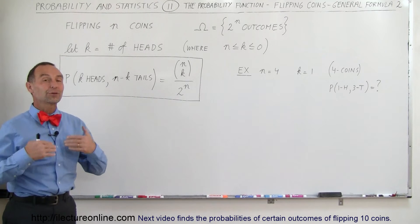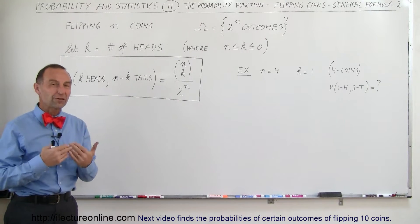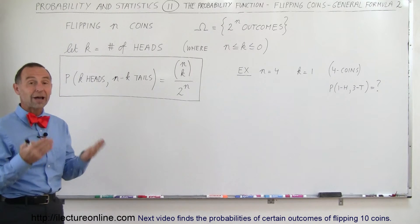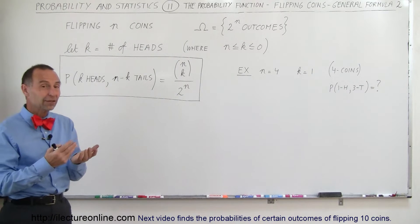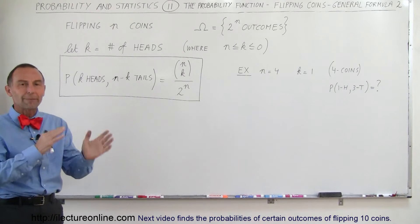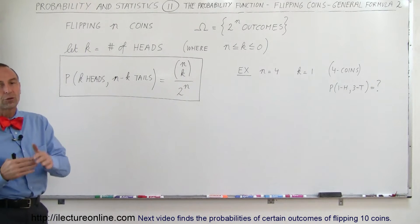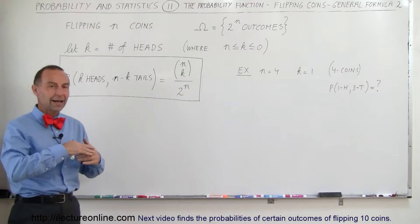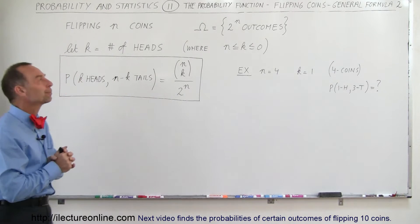Welcome to Electron Online. Now we're going to try to find a more general equation for the probability of some sort of outcome or event for flipping a coin or anything that has to do with a binary situation: hot, cold, one, two, zero, one, heads, tails, anything like that.